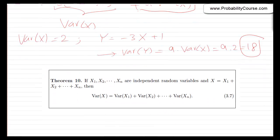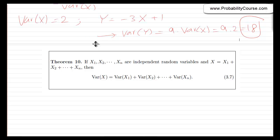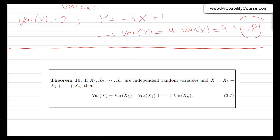Here is a very useful result: if x₁, x₂, ..., xₙ are independent random variables and x = x₁ + x₂ + ... + xₙ, then Var(x) = Var(x₁) + Var(x₂) + ... + Var(xₙ). Variance appears linear in this specific case, but only when the random variables are independent. We will prove this later.